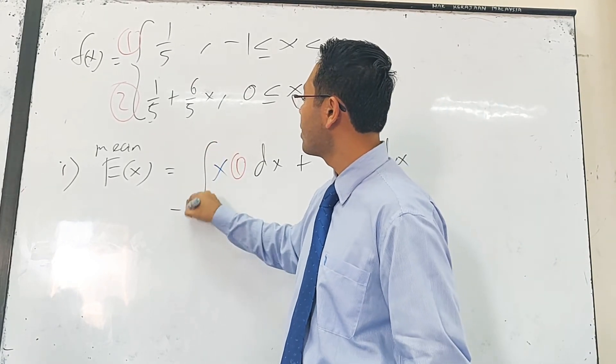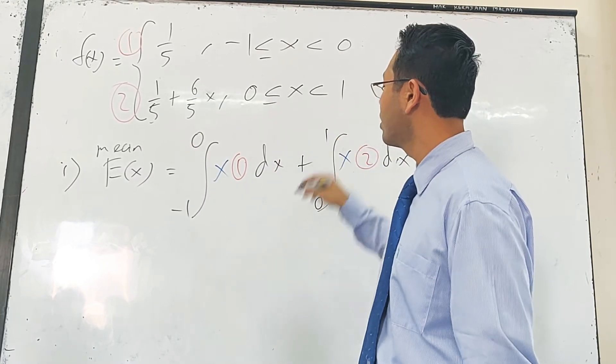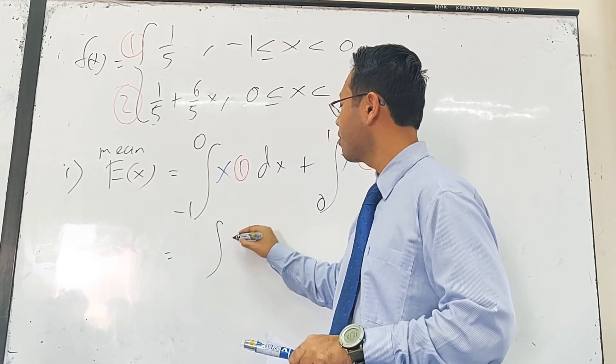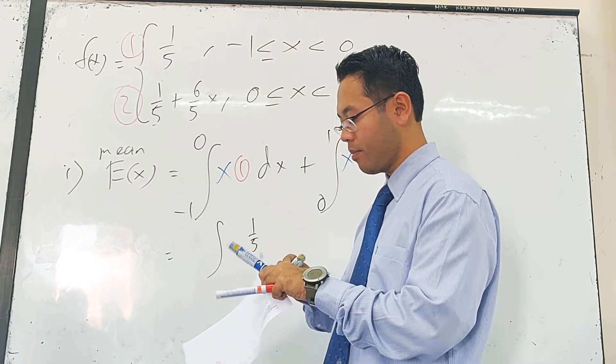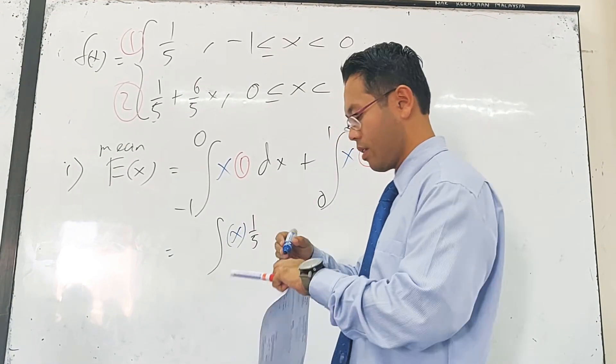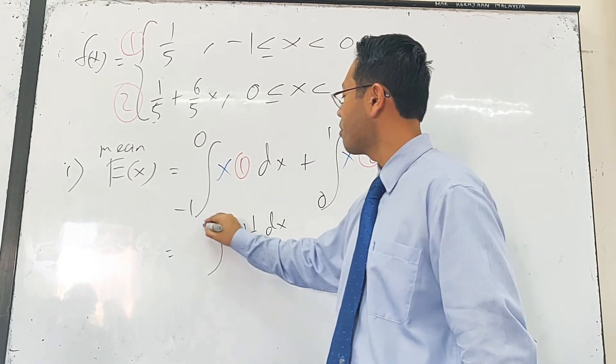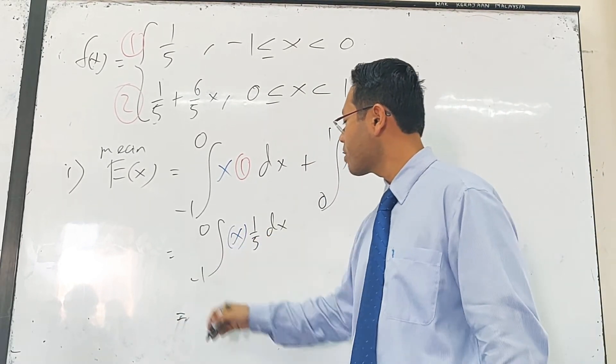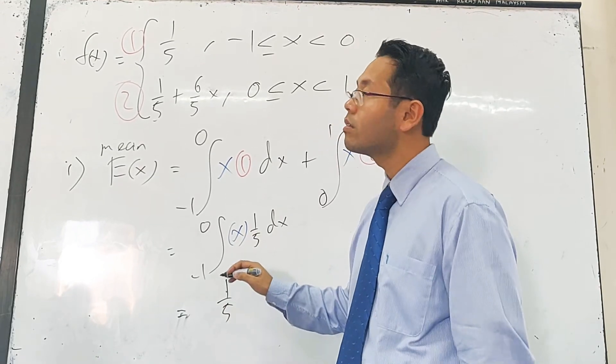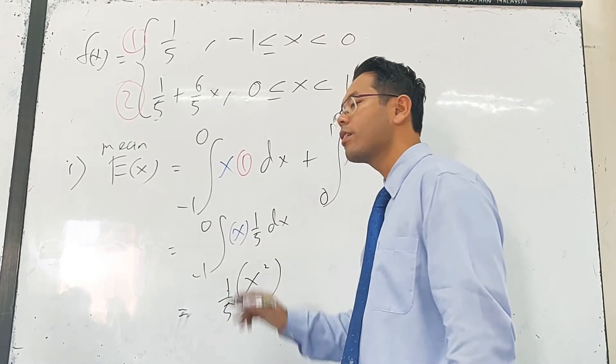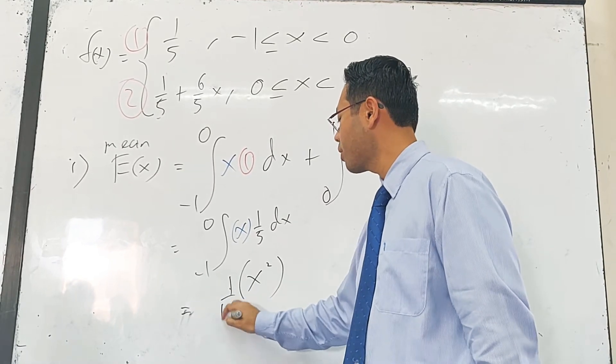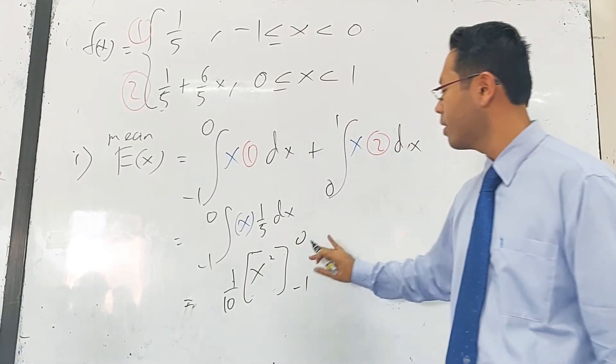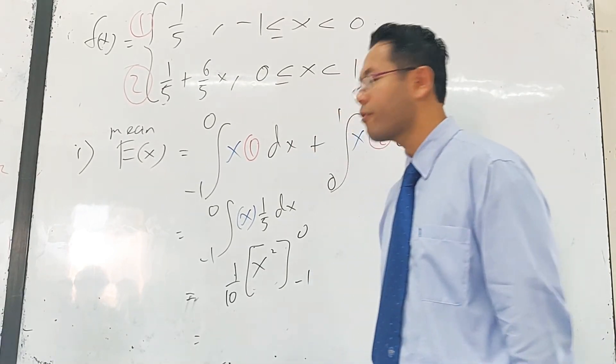So this one here we integrate from negative 1 until 0 and 0 until 1. So you want to get yourself integrate of 1 over 5 times by x, dx, integrate from 0 to negative 1. Where 1 over 5 is constant I can take it out. Integrate x, x squared, so x squared over 2 which is also multiply here, 10.